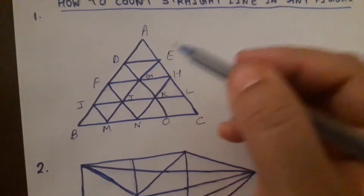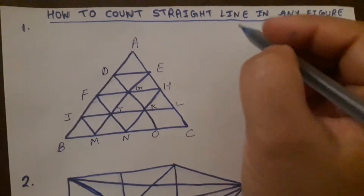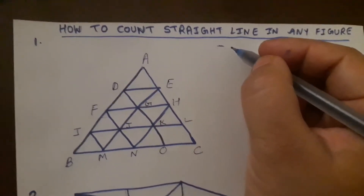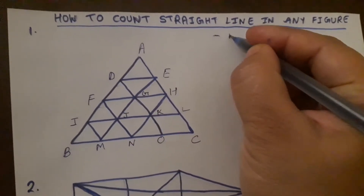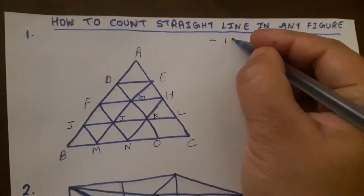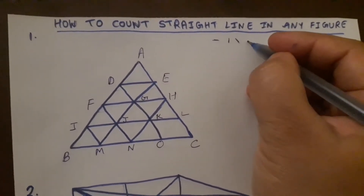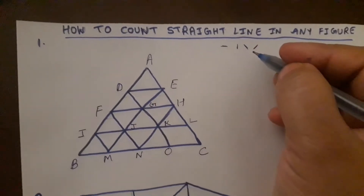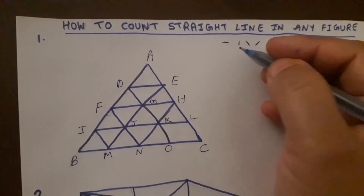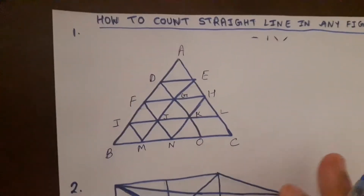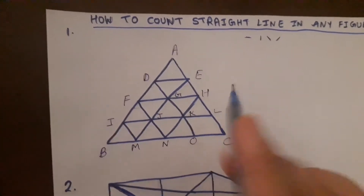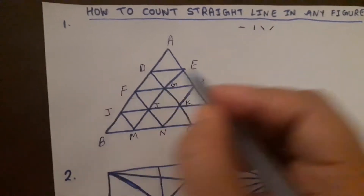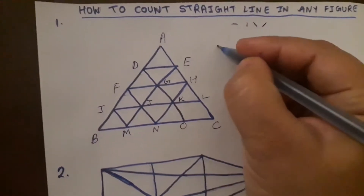Always start counting with horizontal lines. What is a horizontal line? This is called a horizontal line. After that you have to count the vertical lines, then right slanting lines, and then left slanting lines. In this order you have to start, so that it will be very easy to count and you will not miss any line. So first we have to count horizontal lines.